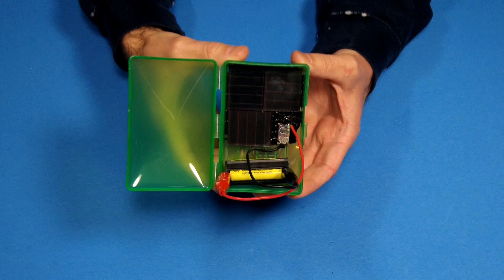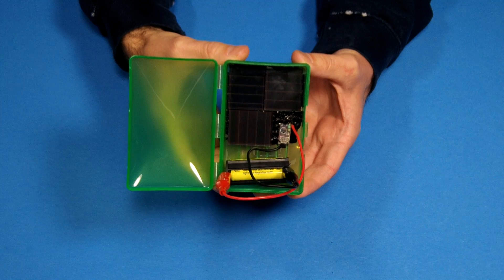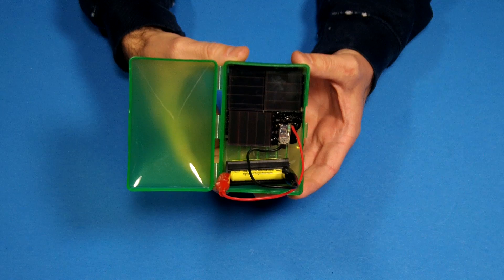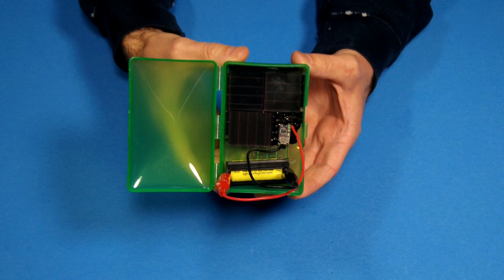My parts are three solar stake lights, a travel soap dish, two old alligator clips, some silicone, and an old battery holder from a small flashlight. Let's get started.